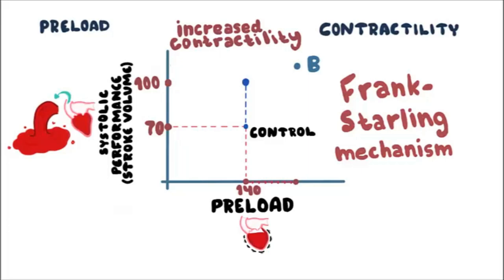From the control point to point B, we have an increase in performance of the ventricle because of increased preload via the Frank-Starling mechanism. Contractility is the same along the entire length of the line. However, from the control point to point A, we have an increase in performance despite the preload not being changed. If the performance of the ventricle increases while preload is not increased, this is because of increased contractility.